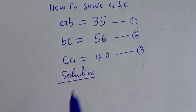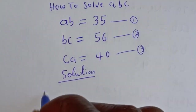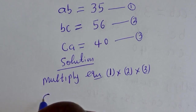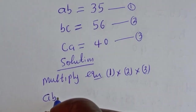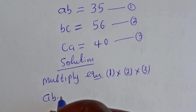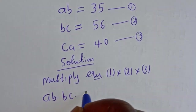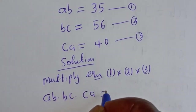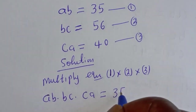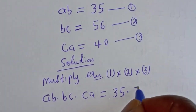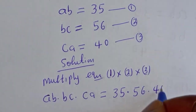Let's multiply equation 1 by equation 2 and by equation 3. Then AB multiplied by BC multiplied by CA is equal to 35 multiplied by 56 multiplied by 40.